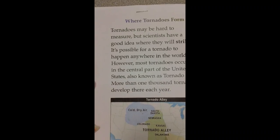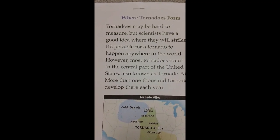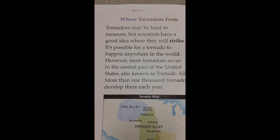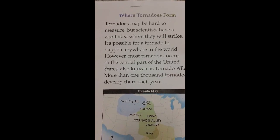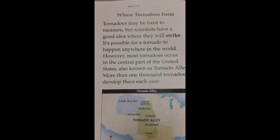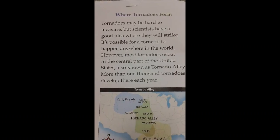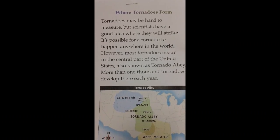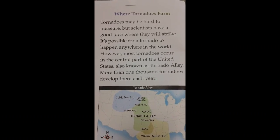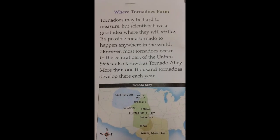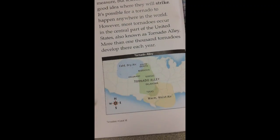Where tornadoes form: Tornadoes may be hard to measure, but scientists have a good idea where they will strike. It's possible for a tornado to happen anywhere in the world; however, most tornadoes occur in the central part of the United States, also known as Tornado Alley. More than 1,000 tornadoes develop there each year.